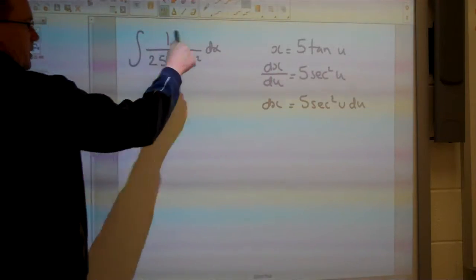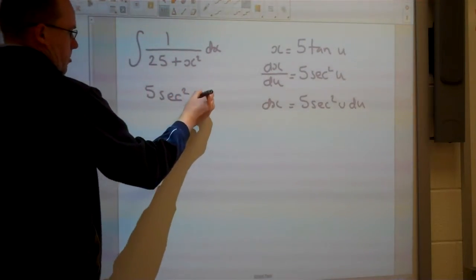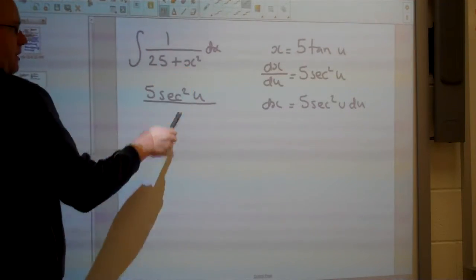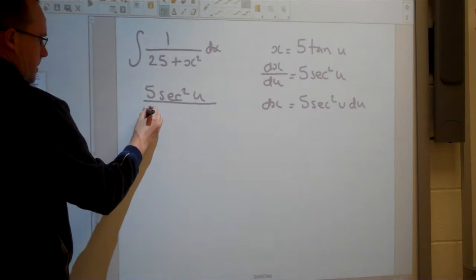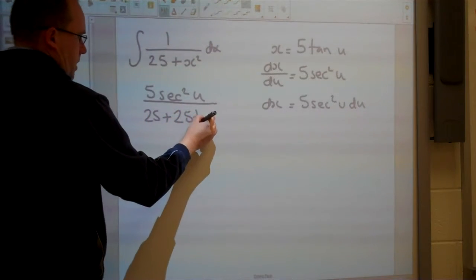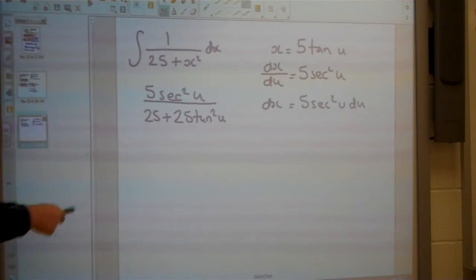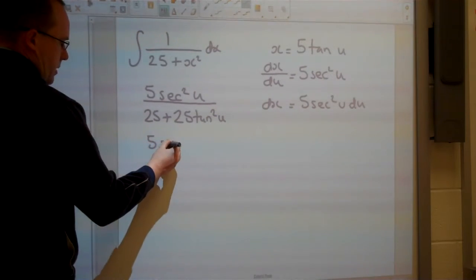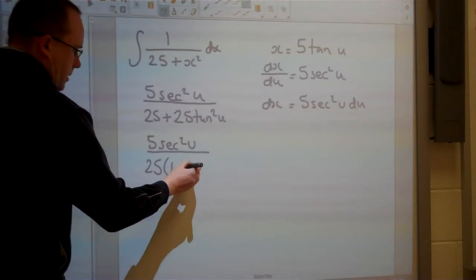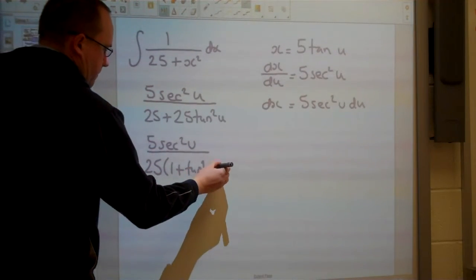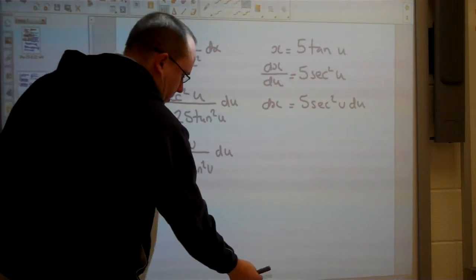Now I can go ahead and substitute, so 1dx is just going to be this. 25 plus x squared, so 25 plus 25 tan squared. And notice I've got a common factor here of 25, so I want to use that. And I forgot my du, so let me quickly add that.